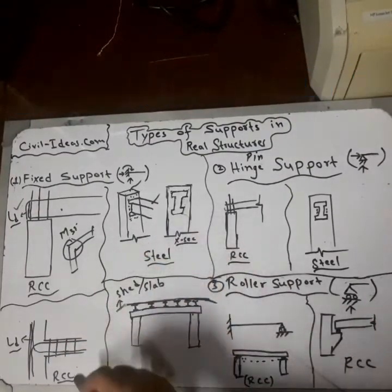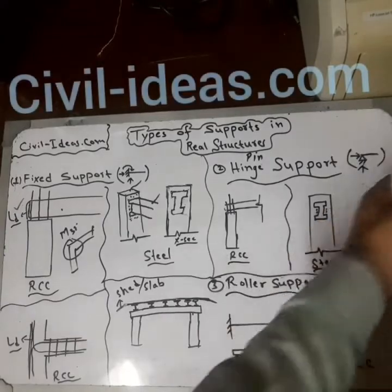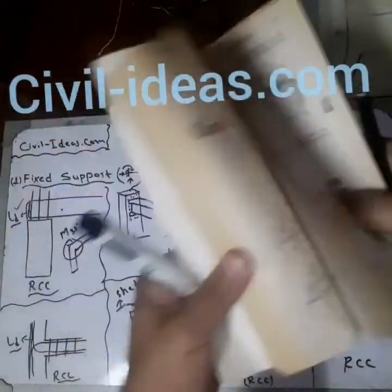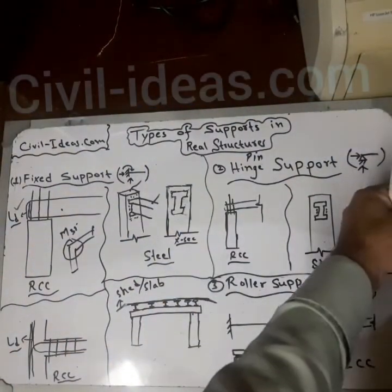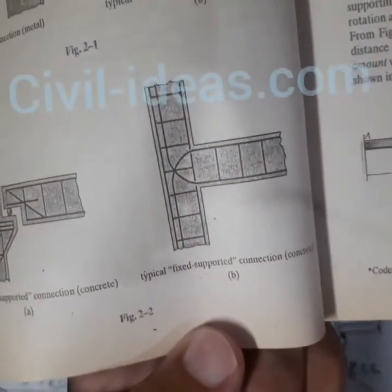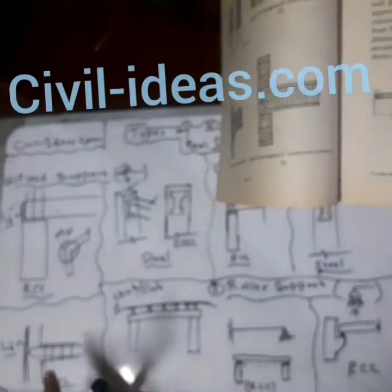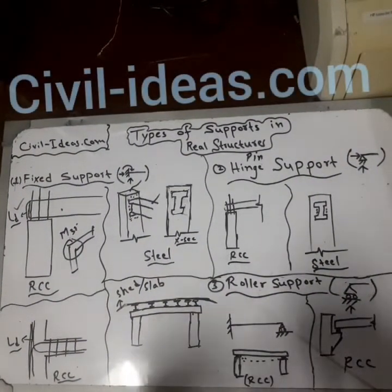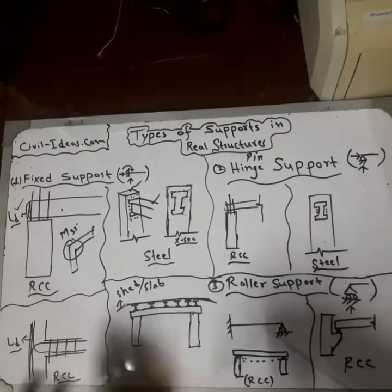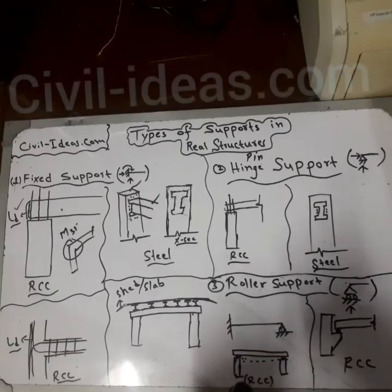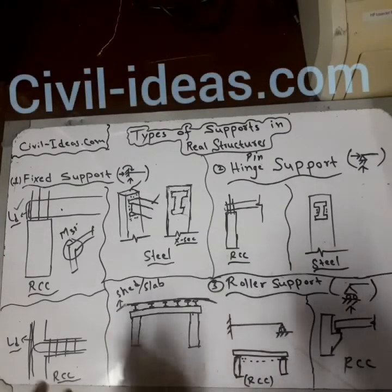Now I will show you the fixed support in a structural engineering book. This is the second type of fixed support which I have drawn here. The development length is provided on both sides, so the reinforcement must be properly embedded into the structure. A proper bond between the concrete and reinforcement ensures load transfer — this is the fixed support.